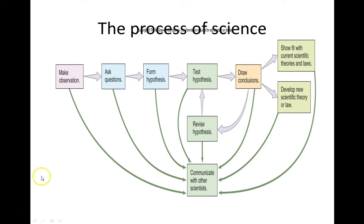From that point, they then go on to test these hypotheses by experimentation. Once they collect the data from their experiments, they then draw conclusions from their results. These conclusions can fit with the scientific evidence or they could go against it. Once these experiments have been concluded, they can share this information with the scientific community through papers and journals. So it's an ongoing process that's tweaked.